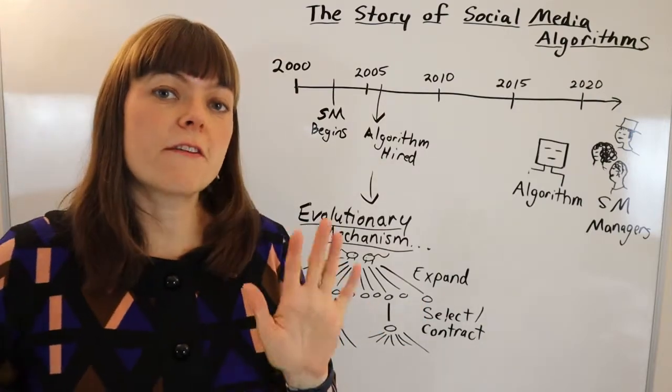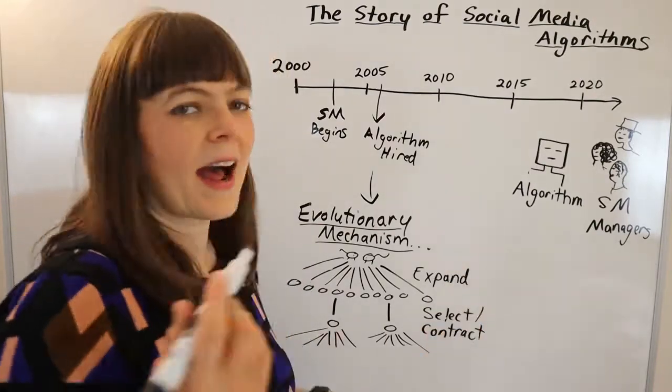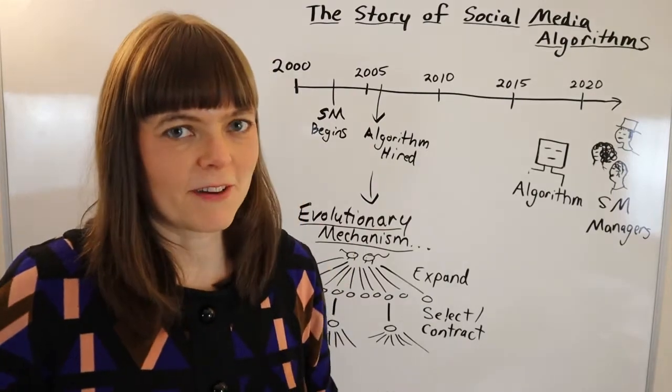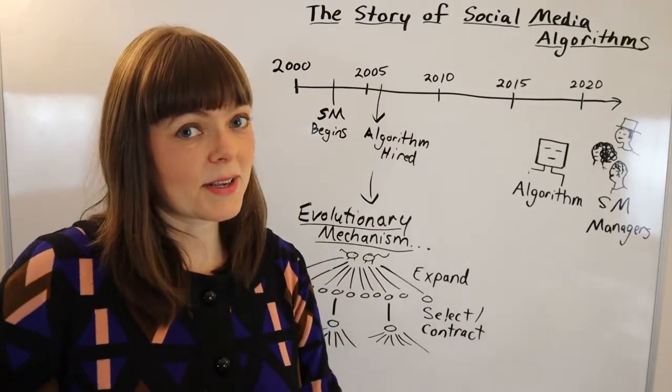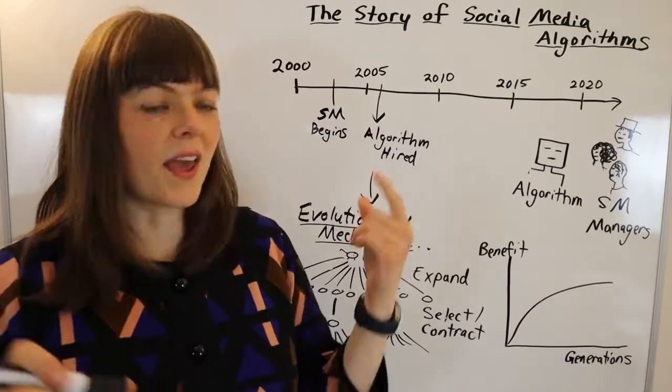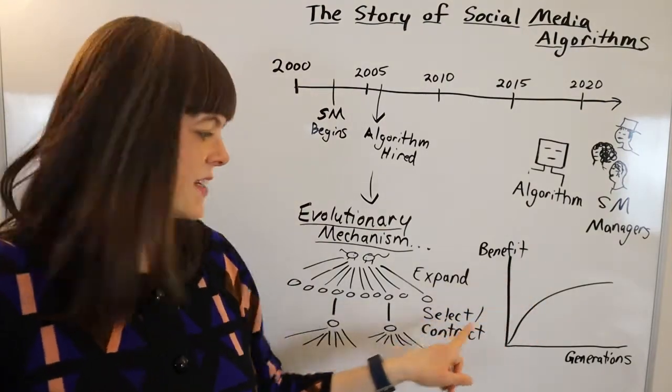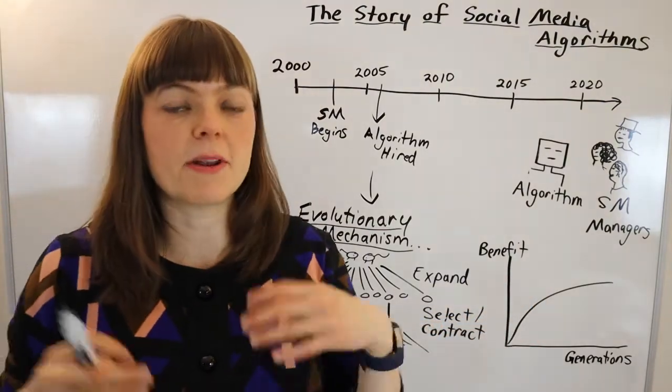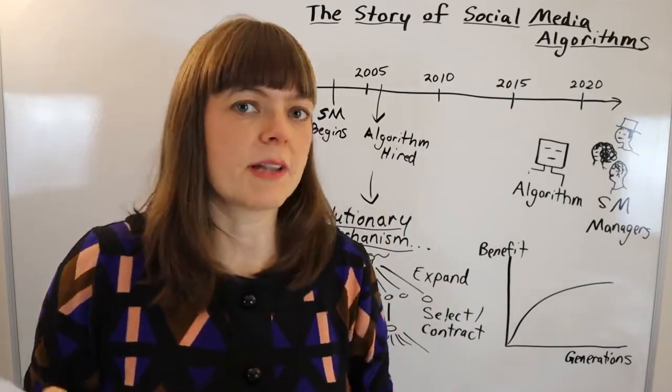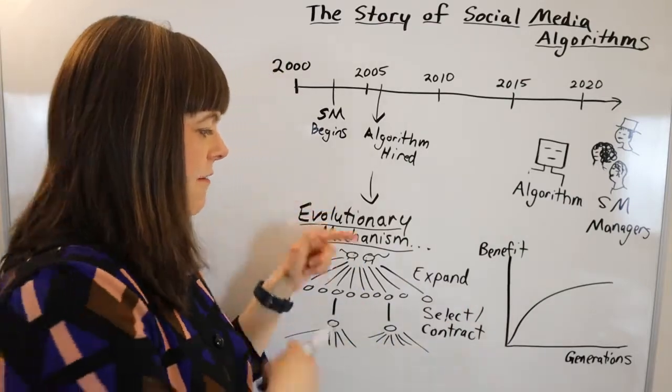However, there eventually got to be a problem, and the way all of these problems are going to work have the format of diminishing marginal benefit. This is an economics concept but it applies. So let me draw that first. Diminishing marginal benefit here, where benefit is going to relate to the selection criteria.